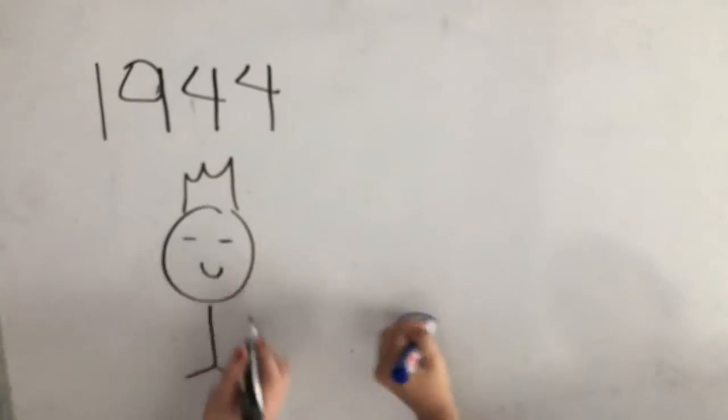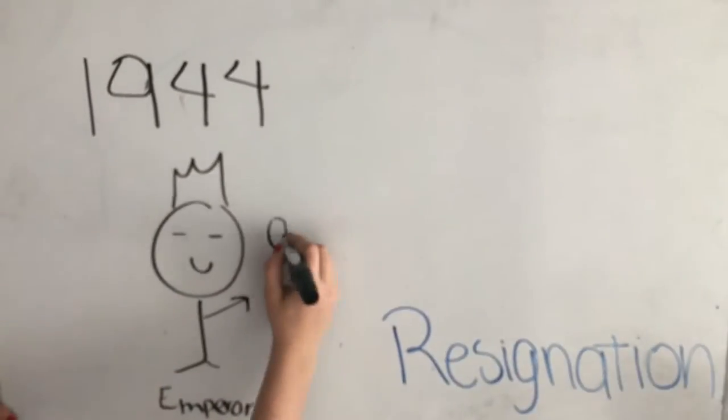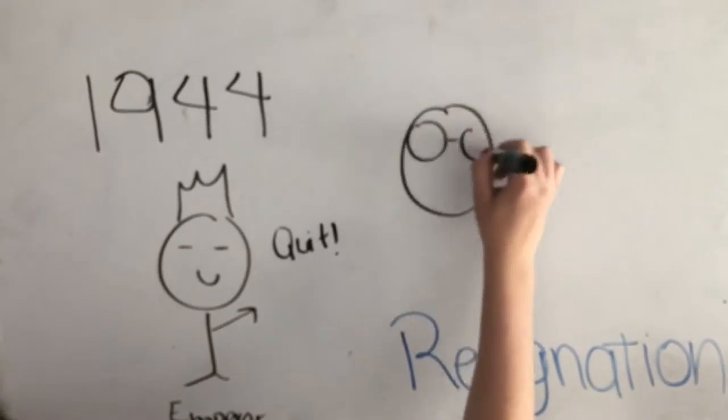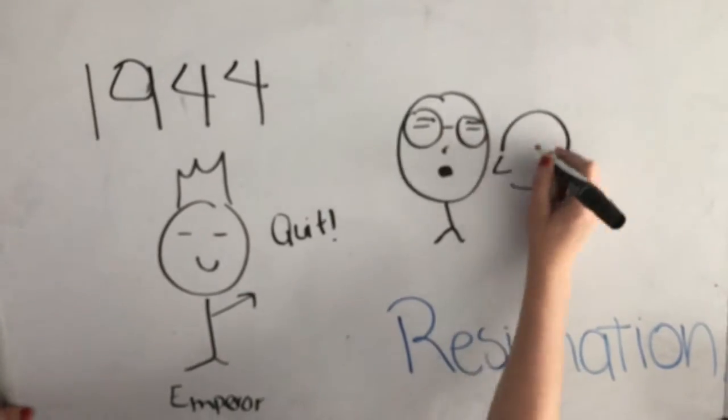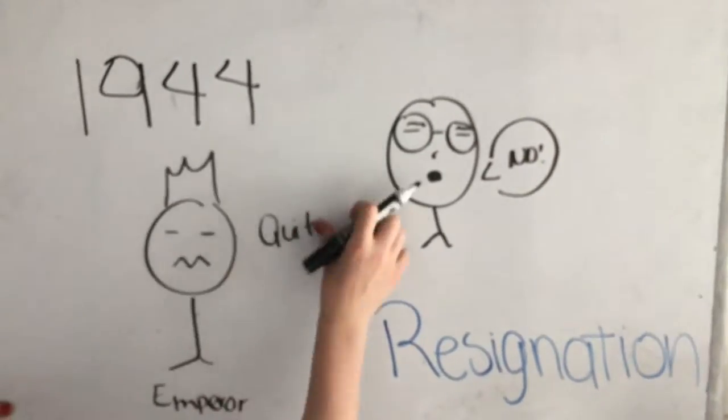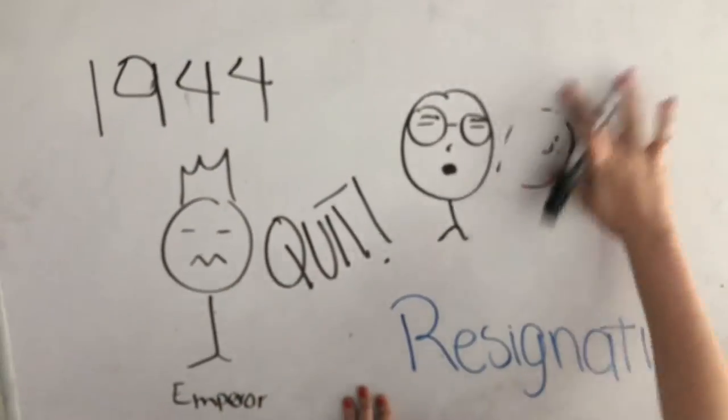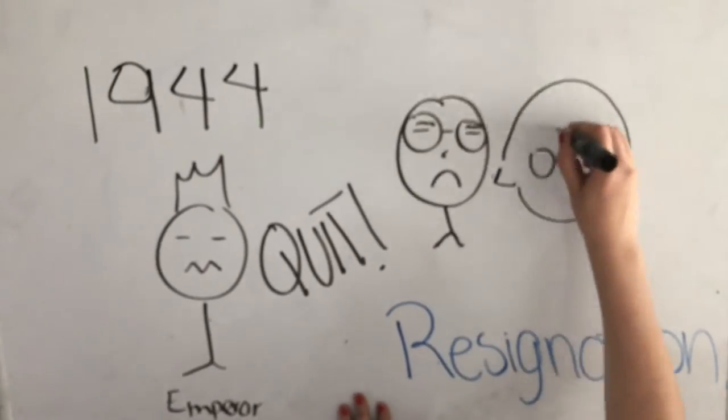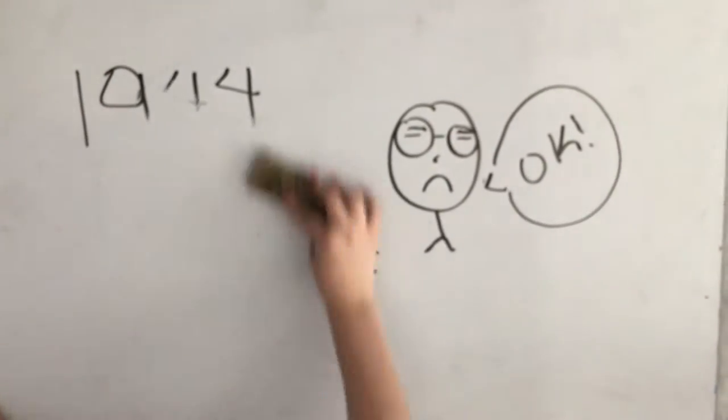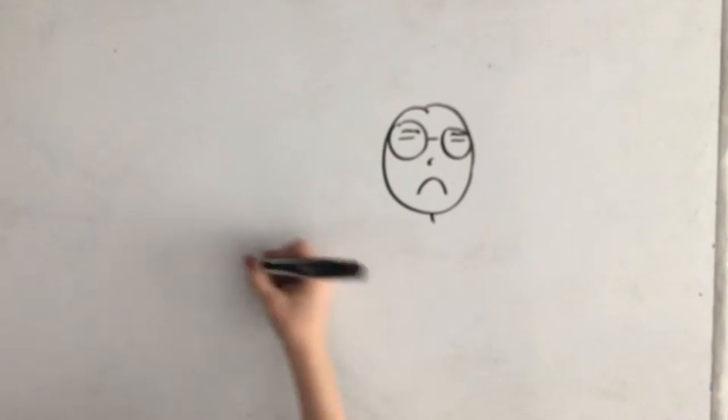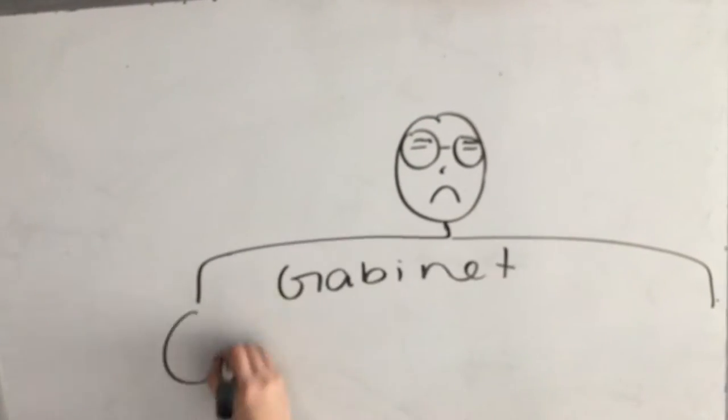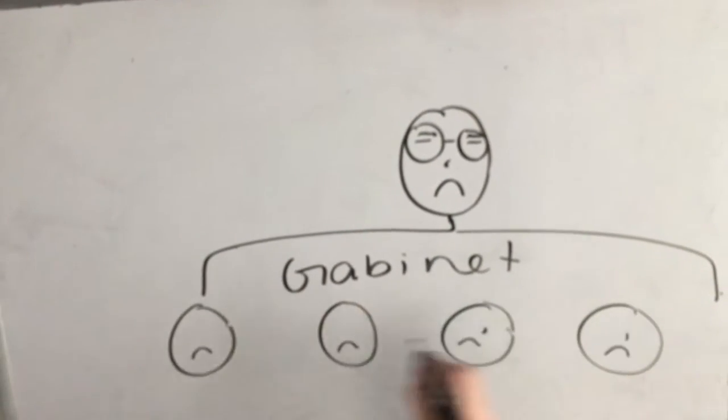In the successful Allied invasion of the Marianas islands, Hirohito ordered the resignation of Hideki Tojo. Hideki Tojo signed his resignation on July 16 of 1944 and on July 18 he and his entire cabinet signed his resignation. Two days later Koiso Kuniaki took his place.